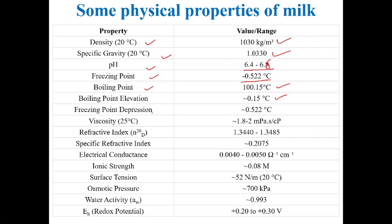Additional physical property values: viscosity at 25°C ranges from 1.8 to 2 millipascal-seconds (or centipoise, which are equivalent units); refractive index ranges from 1.3440 to 1.3485; specific refractive index is 0.2075; electrical conductance ranges from 0.0040 to 0.0050 ohm⁻¹cm⁻¹; ionic strength is approximately 0.08 molar; surface tension is approximately 52 N/m; osmotic pressure is approximately 700 kPa; water activity is approximately 0.993; and redox potential is 0.22 to 0.30 volt. A dairy technologist must always remember these values.